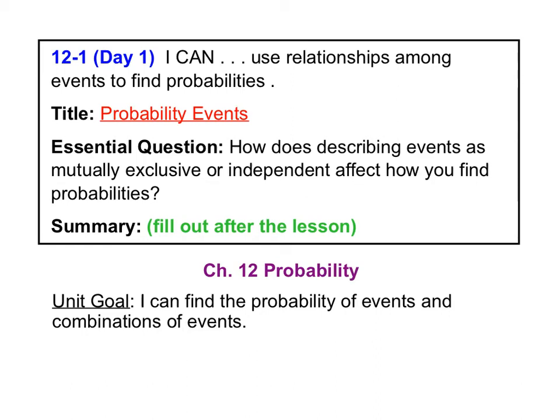Welcome to your 12.1 day one lesson video. Today we're starting a new unit, chapter 12 on probability. The unit goal is: I can find the probability of events and combinations of events. Today's lesson, 12.1 day one, is on probability events. The essential question we'll be answering is how does describing events as mutually exclusive or independent affect how you find probabilities. On day one, we're going to focus on basic probability calculations and mutually exclusive events. In 12.1 day two, we'll hit on independent probabilities. So let's get started.